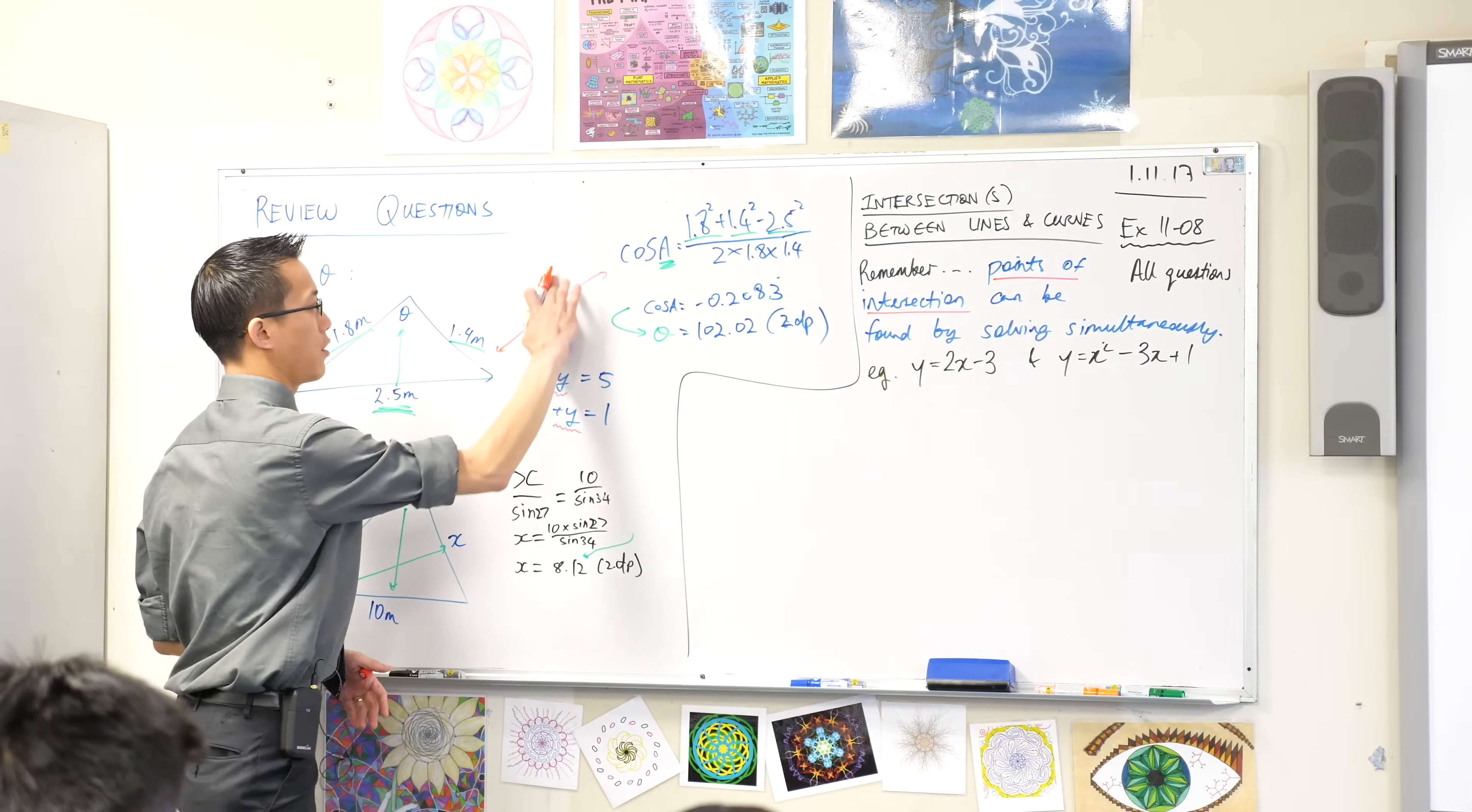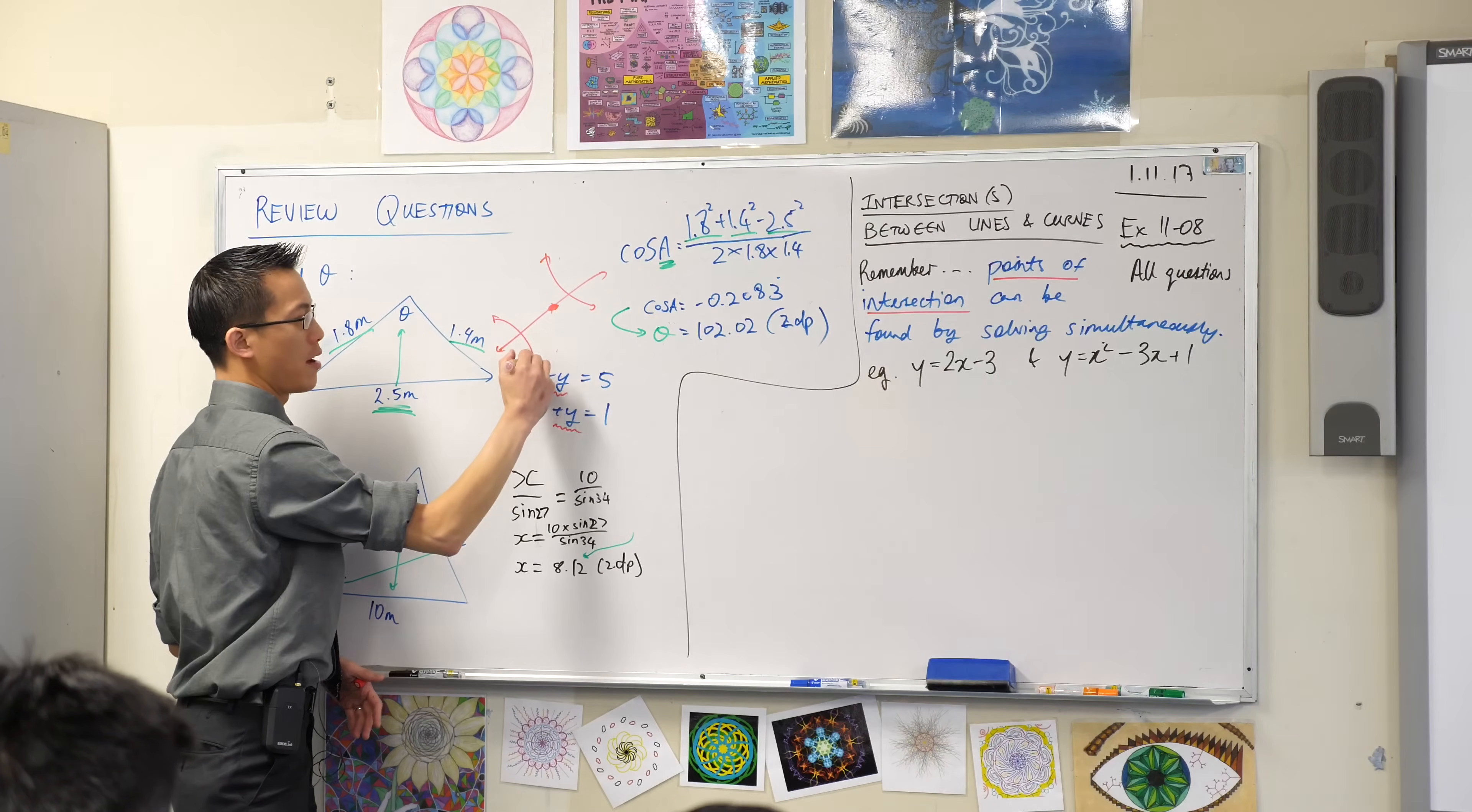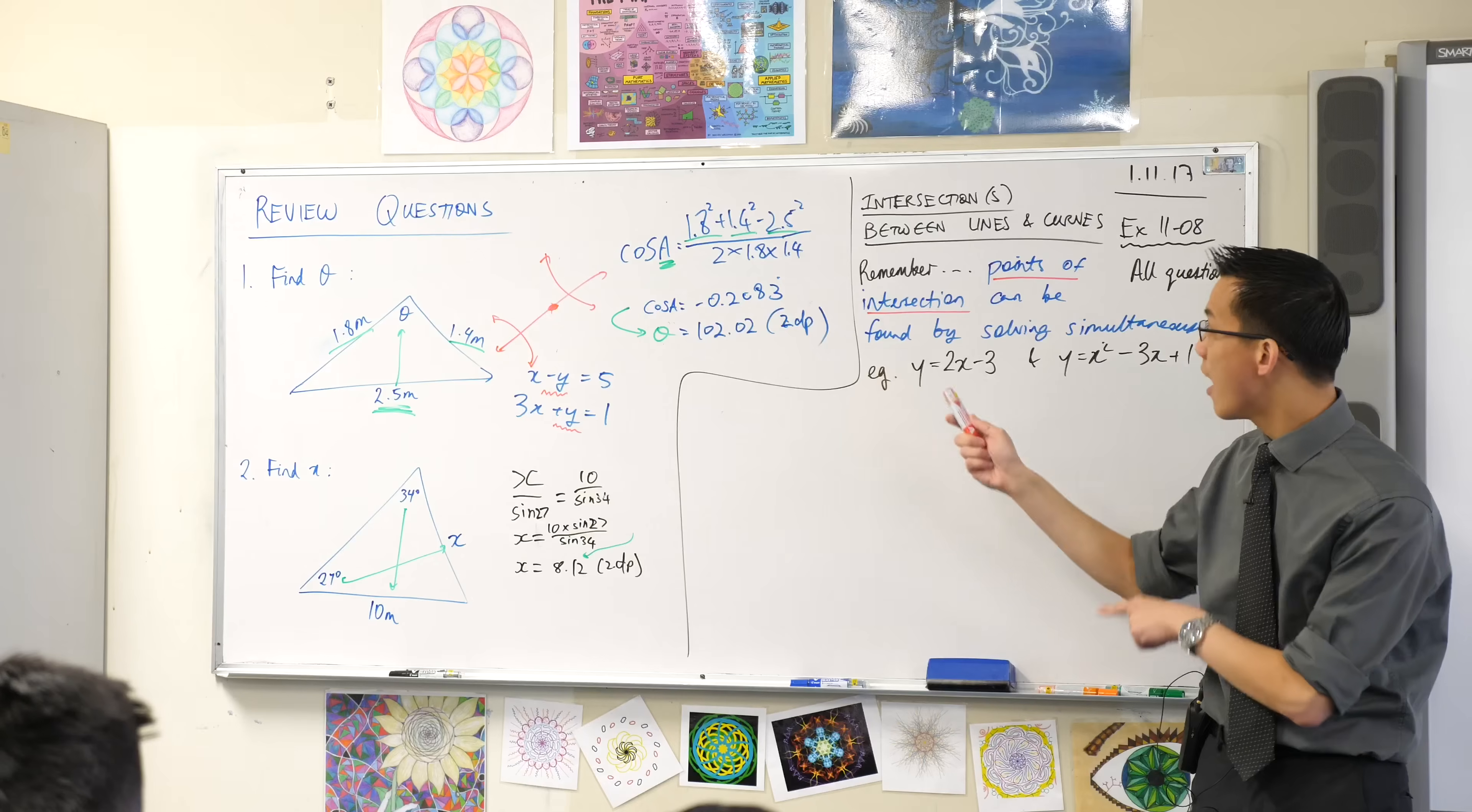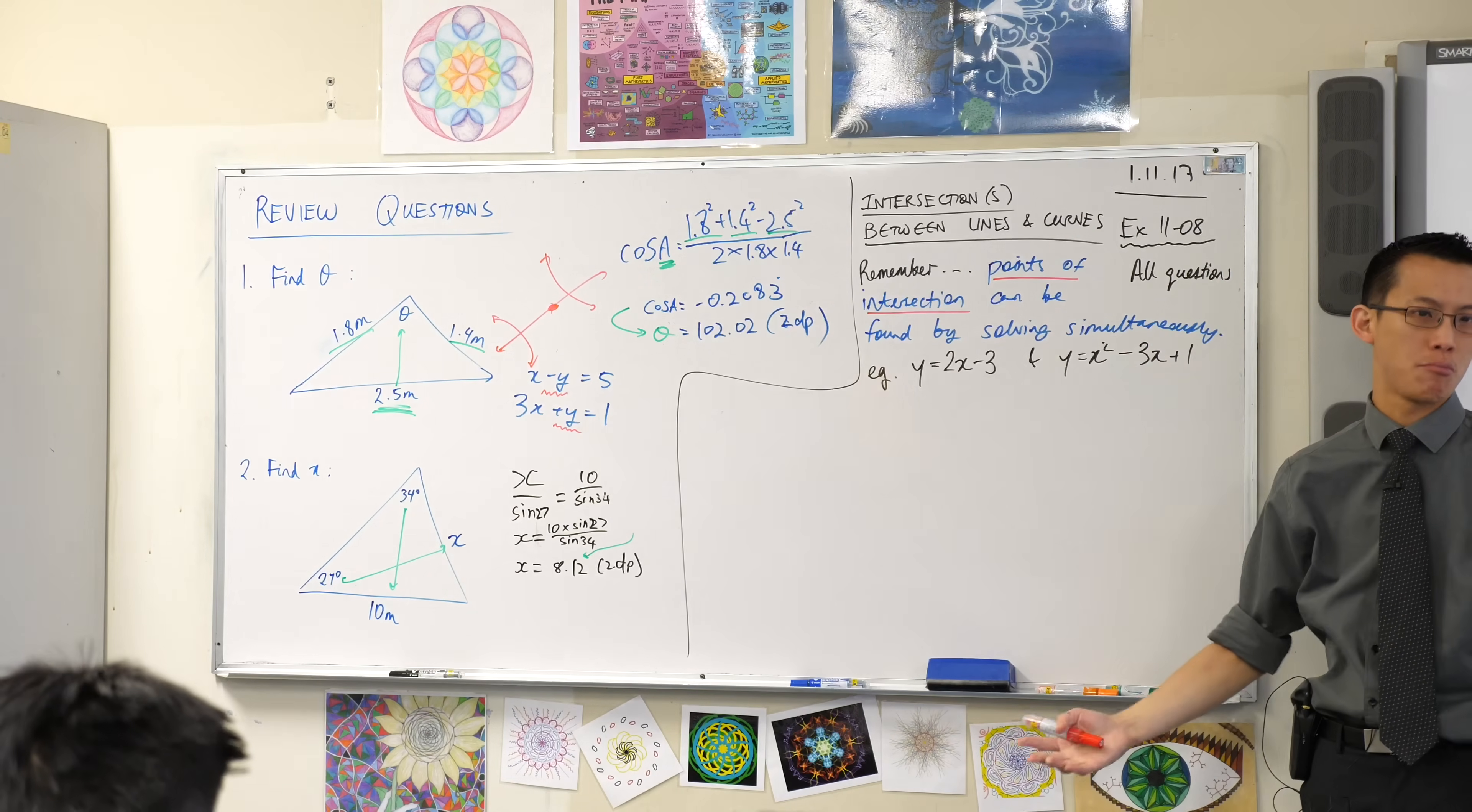Like the weirdo hyperbolas you might remember from the graphing topic, you can see oh now you might get more than one intersection, which is why I put the s in brackets.